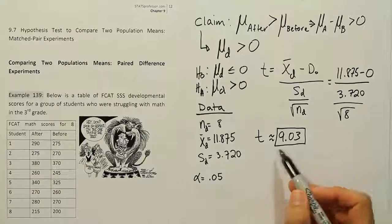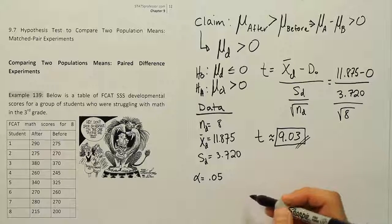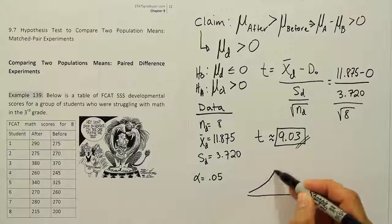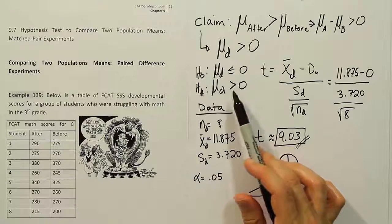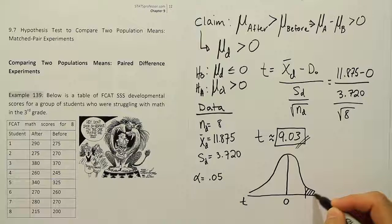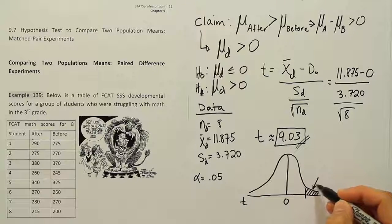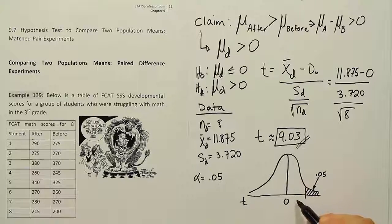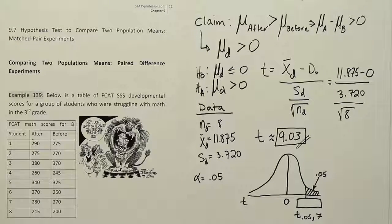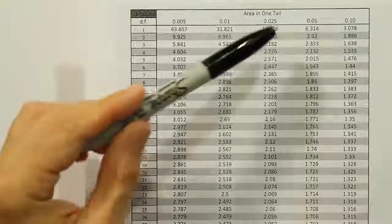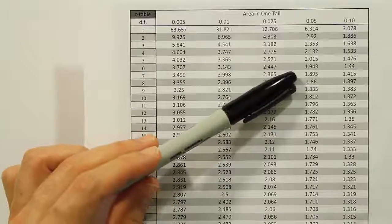To confirm this is significant, we'll draw a bell curve and use the critical value method to test the hypothesis. Since the symbol in Hₐ is greater than, we're dealing with a right-tail test, so we shade the tail on the right-hand side and put the 5% alpha all in one tail. We then go to the t-table and look up t at 0.05 with degrees of freedom equal to N minus 1, which is 8 minus 1 equals 7. Looking up 0.05 with 7 degrees of freedom gives us the critical value 1.895.